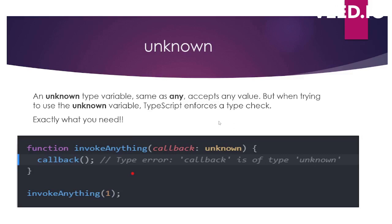Now let's try the same thing with unknown. I have the same function invokeAnything, the same callback argument, and the same function call where I'm passing a number. With unknown, it can also accept anything — number, boolean, string. I'm passing the same number one, but in line two you can see I'm getting a type error: 'callback is of type unknown.' This is a compile-time error that I get when using unknown.